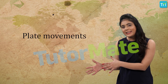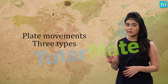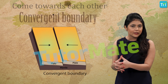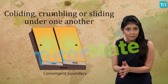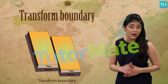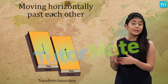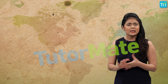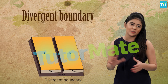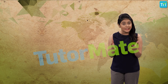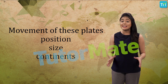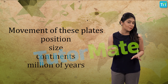These plate movements are broadly classified into three types. They come towards each other and form a convergent boundary by colliding and crumbling or sliding under one another. Or a transform boundary by moving horizontally past each other. Sometimes they move away from each other and form a divergent boundary. It is the result of these movements of these plates that the position and size of the continents has changed over millions of years.